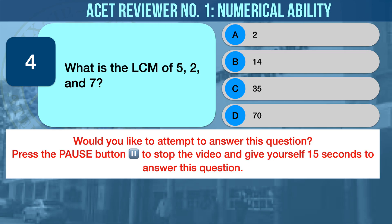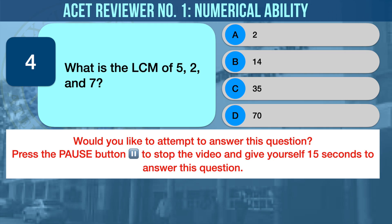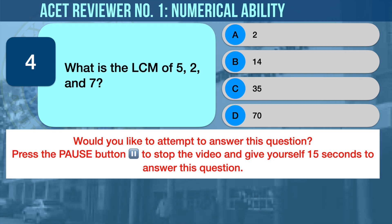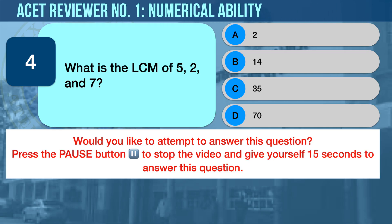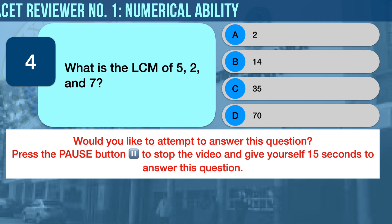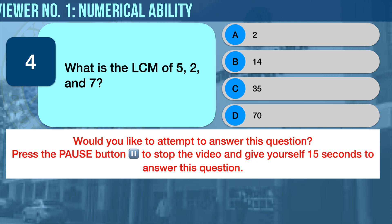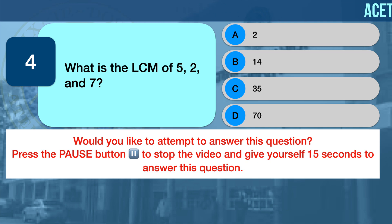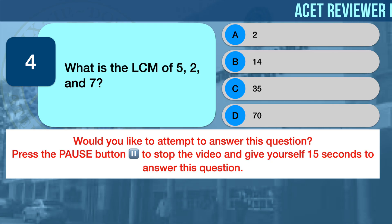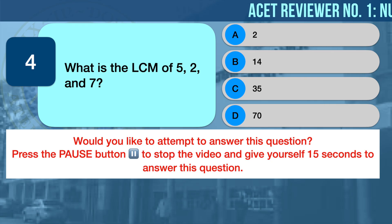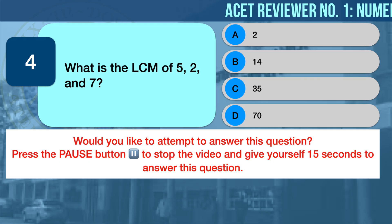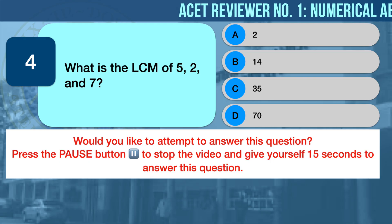Numerical Ability Problem Number Four: Least Common Multiple. What is the least common multiple of 5, 2, and 7? A) 2, B) 14, C) 35, D) 70.